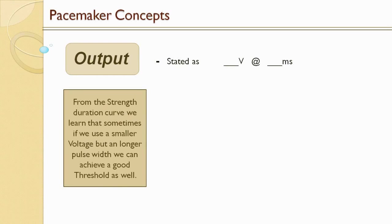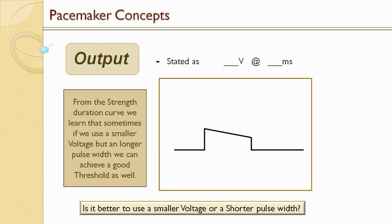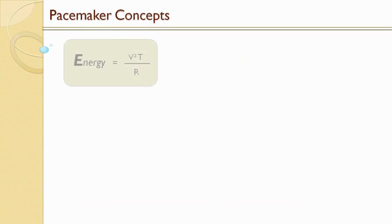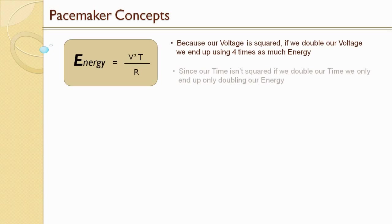From the strength duration curve, we learned that sometimes using a smaller voltage but a longer pulse width can achieve a good threshold. So is it better to use a smaller voltage or a shorter pulse width? To find that out, we look at the energy equation: energy equals voltage squared times time divided by resistance. Because voltage is squared, if we double our voltage we end up using 4 times as much energy. But since time isn't squared, if we double our time we only double our energy.